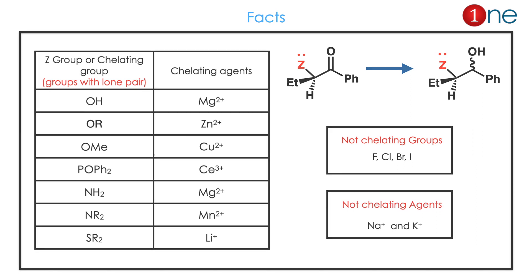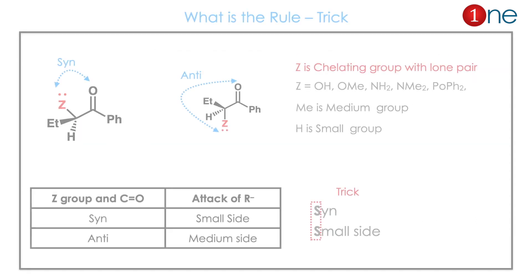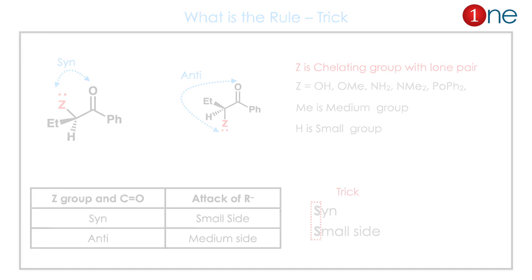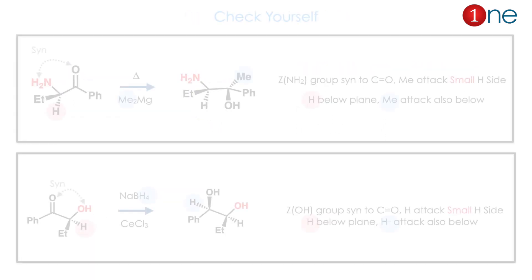Here is the rule, and here is the trick: look at whether the chelating group is syn or anti to the Felkin group. If it is syn, the incoming R-minus group attacks the small side. If it is in the anti position, the attack will be on the medium side. The trick is easy to remember: syn means small side attack.